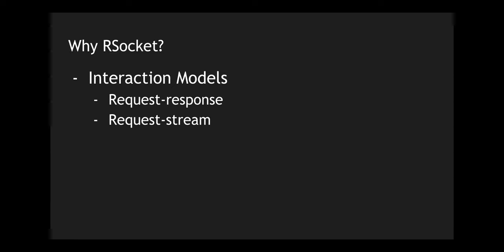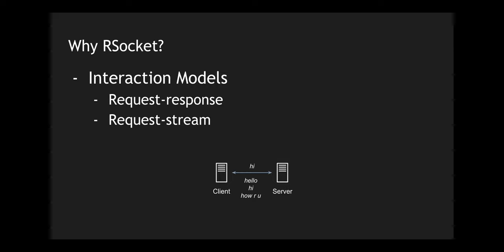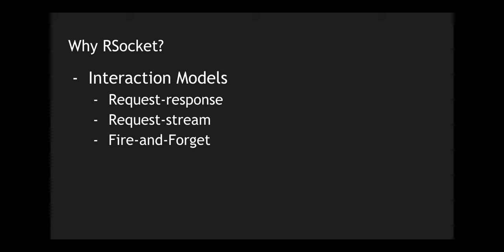The next one is the request stream, where you can request the server for a particular type of message and the server will respond with multiple messages — these could be streaming as well. For example, if you want to stream health endpoints or health checks from the server to the client, you can trigger the server saying you're looking for health checks, and the server can stream the health of the application every second.